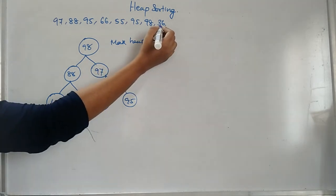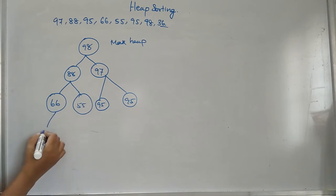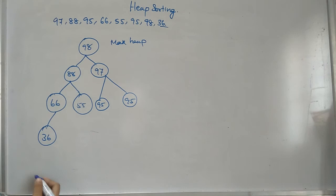And then, after doing these things, the next number is 36. I can insert it here. So in this way, you can represent the list of elements in the heap.